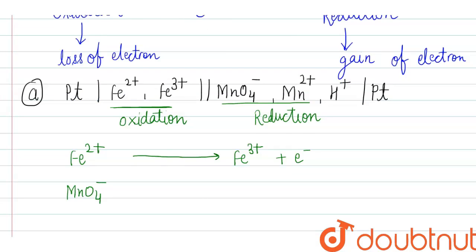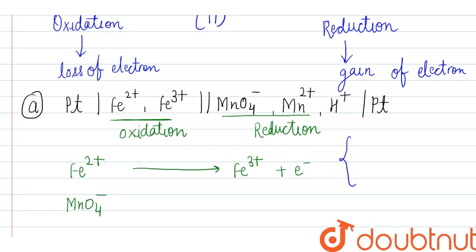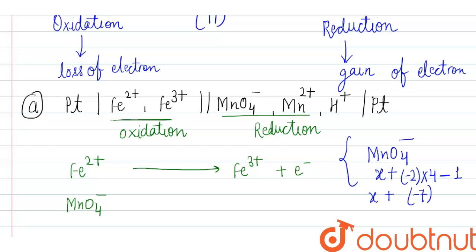We check the oxidation state of MnO4 minus. The oxidation state of oxygen is minus 2, multiplied by 4 gives minus 8. The overall charge is minus 1, so Mn is x: x minus 8 equals minus 1, giving x equals plus 7. So manganese has oxidation state plus 7.